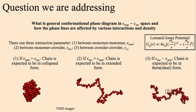The question we are addressing is: what is the general conformational phase diagram in epsilon_mm vs epsilon_mc phase space, and how are the phase lines affected by various interactions and densities? There are two kinds of particles — monomer and crowder — so there can be three interactions: monomer-monomer (epsilon_mm), monomer-crowder (epsilon_mc), and crowder-crowder.